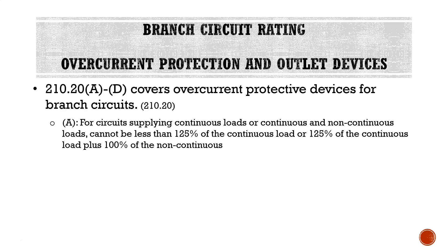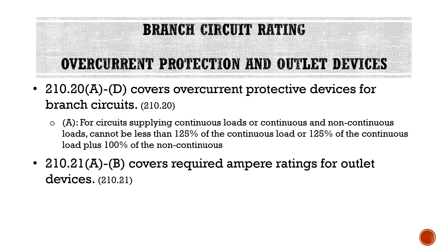If we're connecting a branch circuit to equipment considered a continuous load, the circuit must be sized at least 125% of that device's load. For example, if we have a load of 16 amps, 125% of 16 amps is 20 amps, so we would be required to provide that equipment with a 20-amp circuit. Section 210.21A through B covers required ampere ratings for outlet devices — Part A for lamp holders and Part B for receptacles.